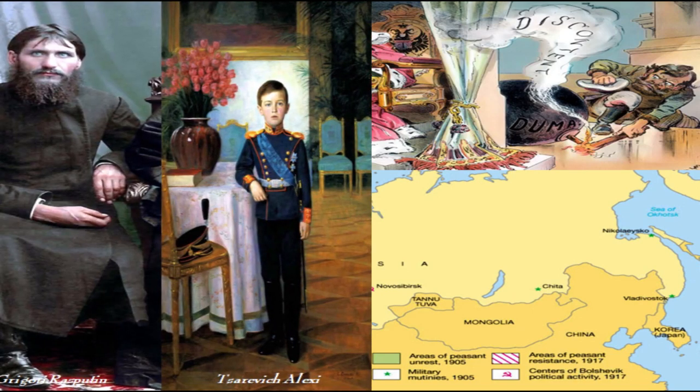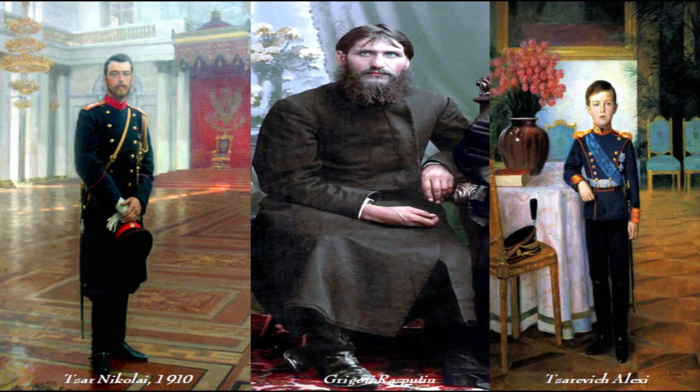Worse, the Tsar was increasingly dominated by his stubborn and uncompromisingly autocratic wife, who herself quickly fell under the domination of an Orthodox priest, Grigory Rasputin, shown here, who promised to cure the Tsarevich Alexei of his hemophilia, a fatal disease.